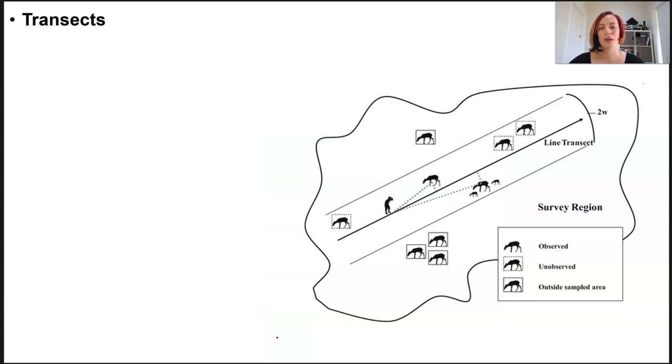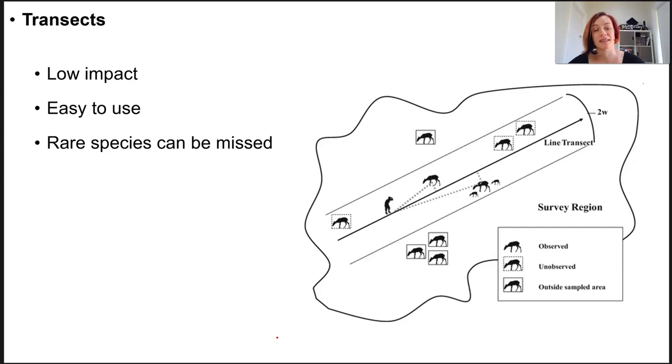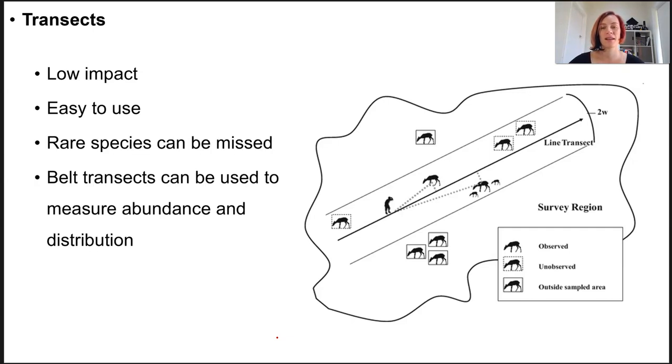Transects are really low impact and can assess the presence or absence really easily along the gradient. But if rare species exist in that area, they're probably going to be missed. Belt transects are used for more than just counts. They can be used for things like abundance and distribution, but at the end of the day, it can be really time consuming.